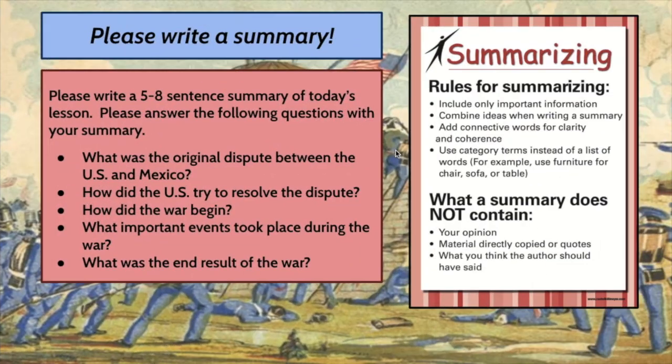It is time to write a summary. This is a lengthy lesson, so we're going to have a lengthy summary — five to eight sentences — answering the following questions: What was the original dispute between the U.S. and Mexico? How did the U.S. try to resolve this dispute? How did the war begin? What important events took place during the war? And what was the end result of the war? Manifest Destiny, at this point, has been realized.